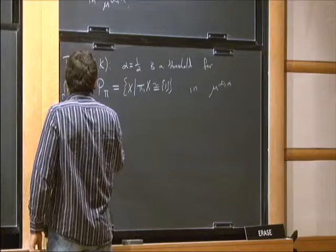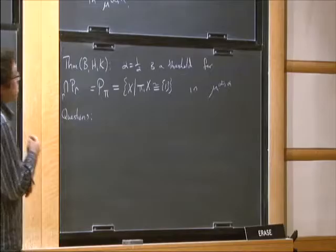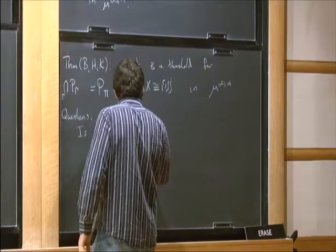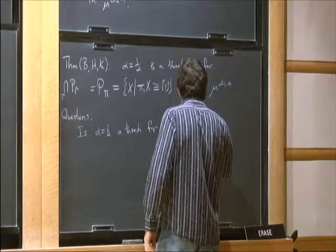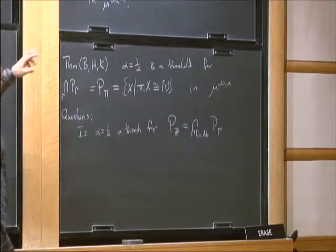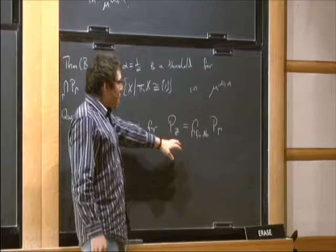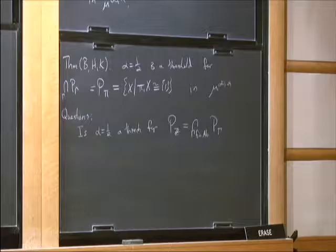So then there are questions that might extend this. The first would be: what happens to the actual Z-homology? Is α = 1/2 a threshold for P_Z, which would also be the intersection over all γ finite abelian of P_γ? What we know is that for each abelian group, we can make it vanish by making N very large. What we don't know is the relative rate at which those happen — this asks that we can have all of them happen at once.